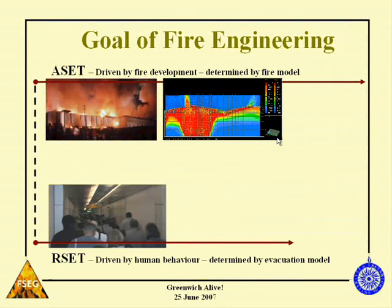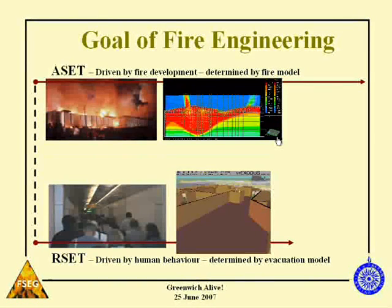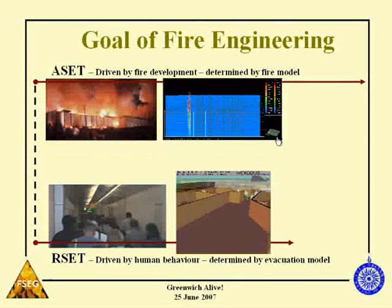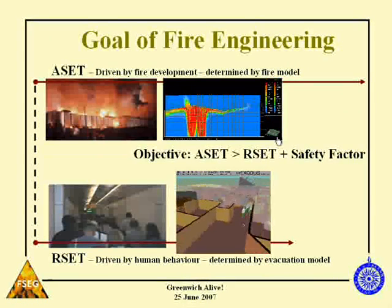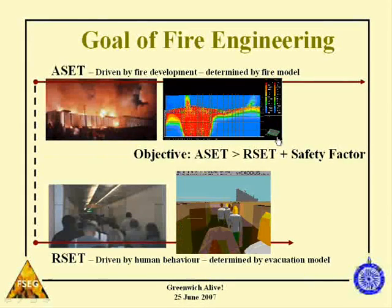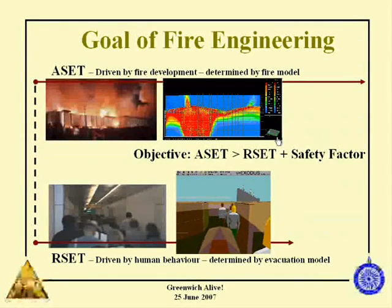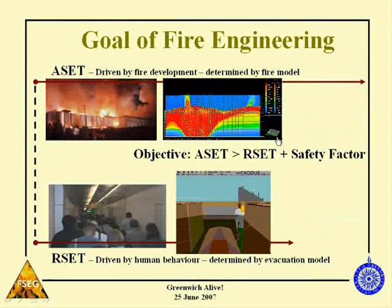You use computer models to do this. The second thing you do is you calculate the RSET, or required safe egress time — how much time is it going to take for all of you people to get out of this compartment? Again, we can use computer models to predict that time. What we hope to show by doing this for our design is that the available safe egress time is greater than the required safe egress time, plus a safety factor. No one believes these models anyway, so you need to add a safety factor in there as well. You want to show that the available time is greater than the required time plus a margin of safety. That's basically what fire engineering is all about.